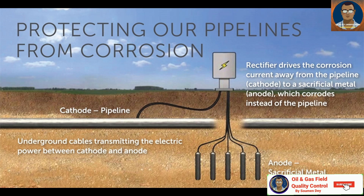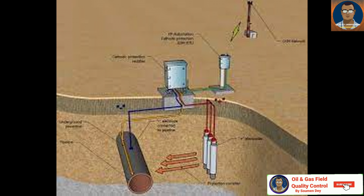Cathodic protection works by providing cathodic protection current to all areas of the metallic surface within the electrolyte — sufficient to make all those surfaces cathodic.